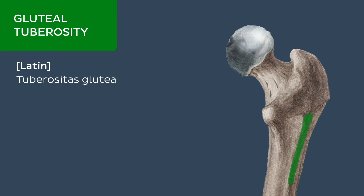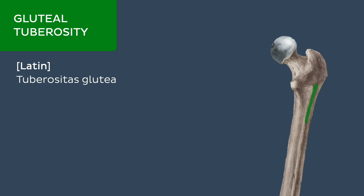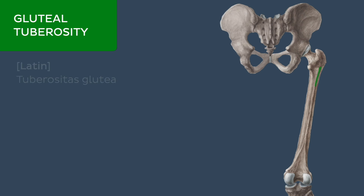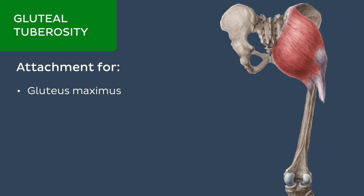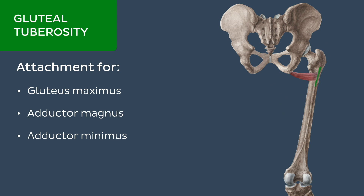The gluteal tuberosity is a bony ridge which extends in a supralateral direction from the lateral lip of the linea aspera towards the greater trochanter. It acts as an attachment site for the gluteus maximus as well as the adductor magnus and minimus muscles.